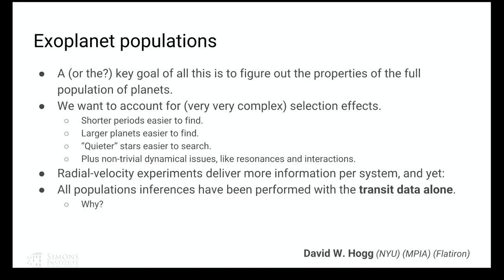Radial velocity experiments should be critical for understanding exoplanet populations, but in fact they are not currently being used in population inferences. The reason is that they have humans in the loop and we don't know how to model the humans. It's hard enough to model all of these selection effects — it is very hard, maybe impossible, to model the humans.